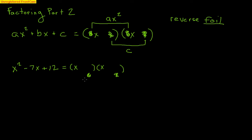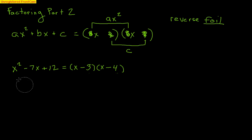Next, we try 3 and 4. That gives x squared in front and 12 in the back. The outside gives 4x, the inside gives 3x, and a 4x and a 3x can definitely make a 7x in the middle. Now for the signs: I need them to multiply to make positive 12 but combine to make negative 7, which means both have to be negative. So x minus 3 times x minus 4 is the complete factorization of x squared minus 7x plus 12.